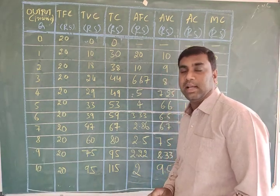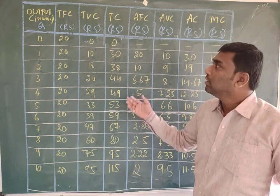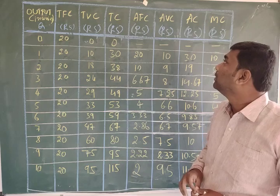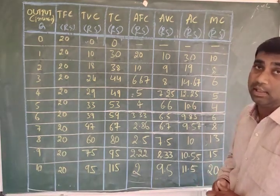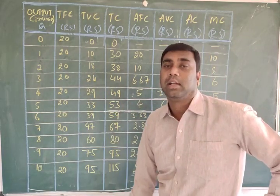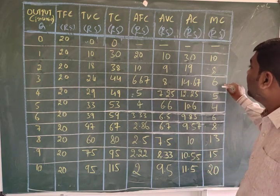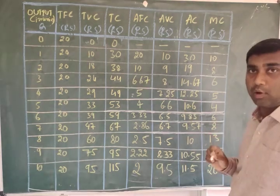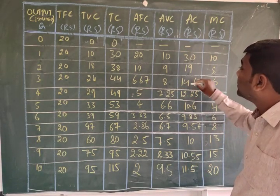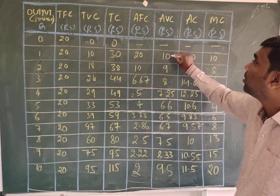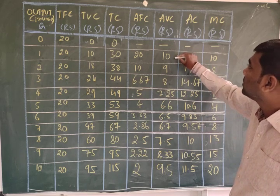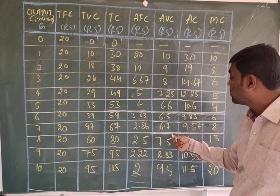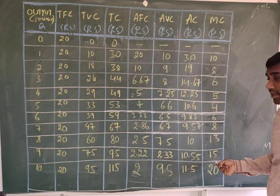Hello students. In the previous class we discussed the table of short-run cost — how to explain and calculate it. You can observe the shapes of TC, TVC, AVC, AC, and TFC. TFC remains completely constant. When AVC is decreasing, marginal cost is also decreasing less than AVC. When AVC starts increasing, marginal cost also increases.